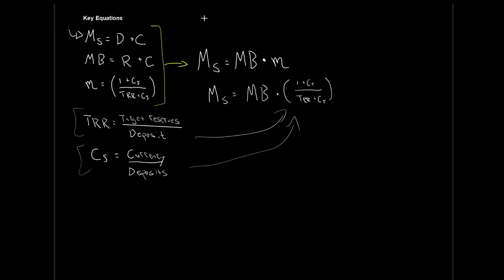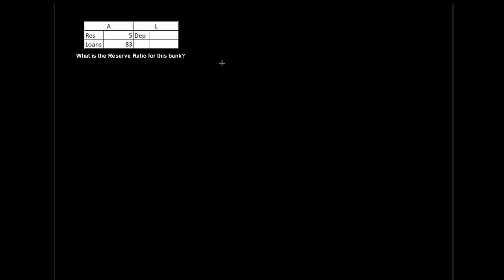Let's take a look at some examples, ordered from easier to tougher. First example: we have a T-table, a balance sheet of the bank. We want to know what is the reserve ratio for this bank — where is this bank currently sitting as a reserve ratio? This is an easier question, but sometimes people get stumped and say they don't have enough information.